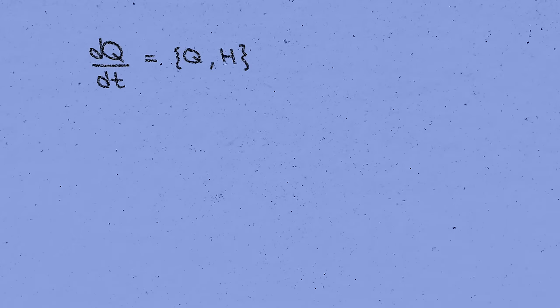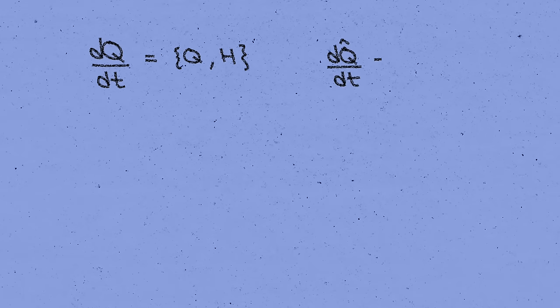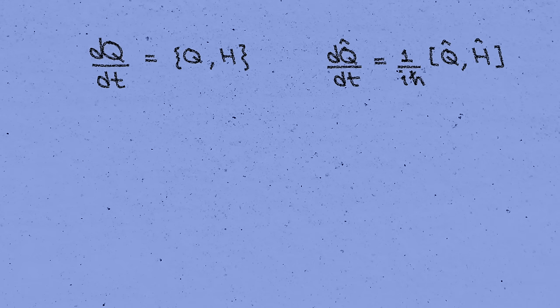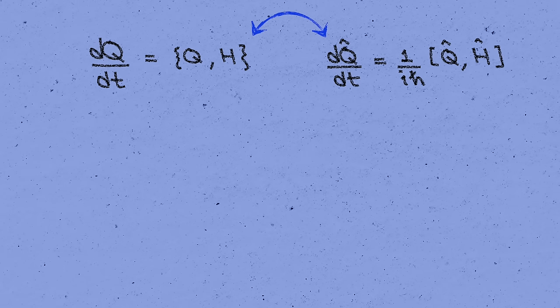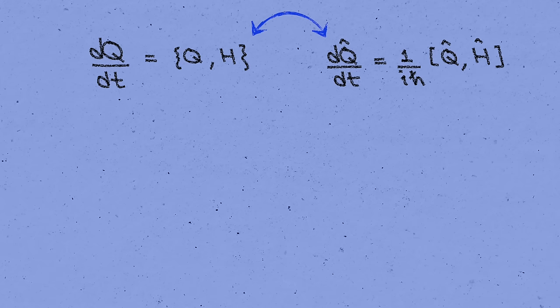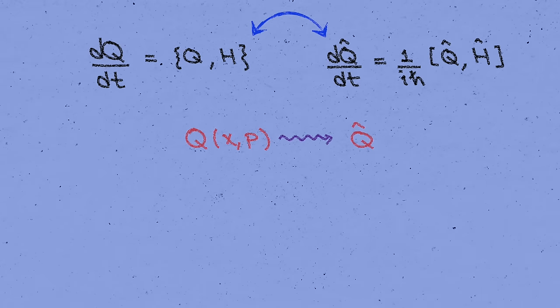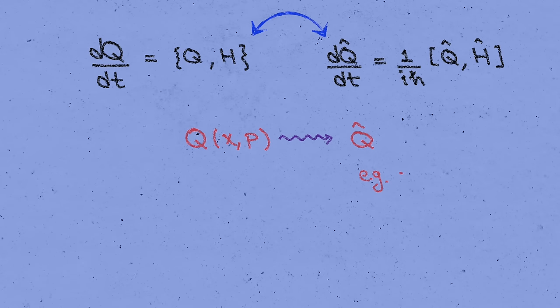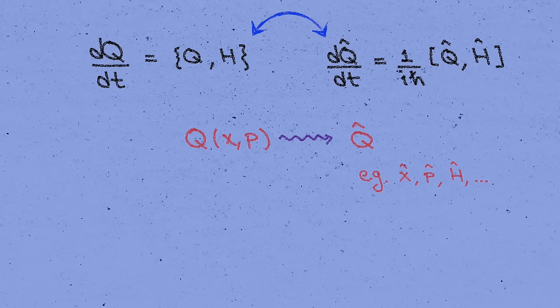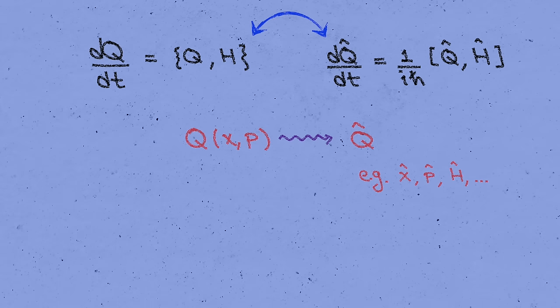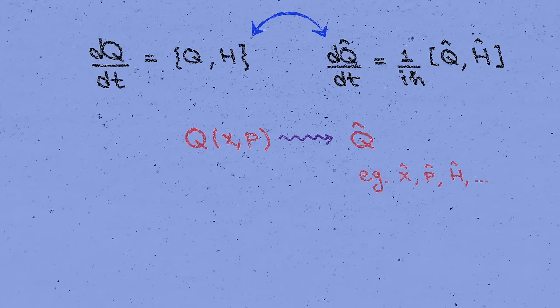Thinking back to where we started a few minutes ago, the thing that's hopefully jumping out at you is that this equation is remarkably similar to the Heisenberg equation of motion for a quantum operator. We're not going to delve too deep into the general rules of quantum mechanics in this video, but the gist is that functions on the classical phase space, like q, turn into operators acting on the quantum wave function. For example, we've got the position operator x-hat, the momentum operator p-hat, and the Hamiltonian operator h-hat, and so on. That's what the hats indicate here. Q-hat is the quantum operator corresponding to the classical function q.